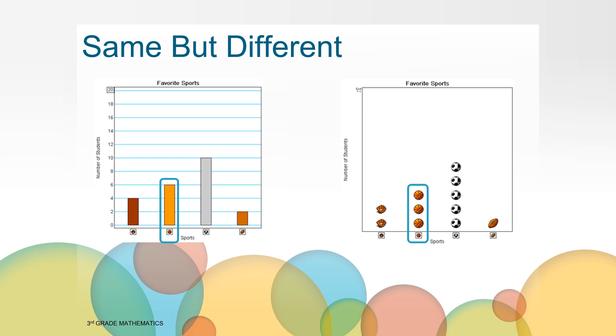How could we use a key in the pictograph to make the numbers in the data match? If we add a key telling us to count each picture by two, then we would count the pictures in the pictograph differently. For example, the basketballs would count as two, four, six, giving us the same total as those in the bar graph. Great detective work!